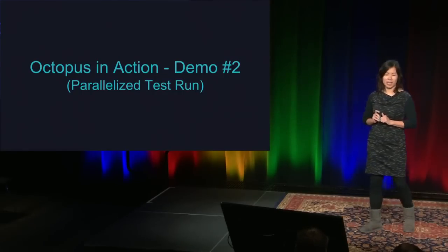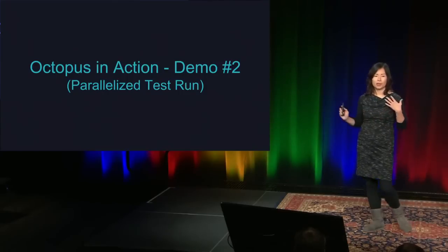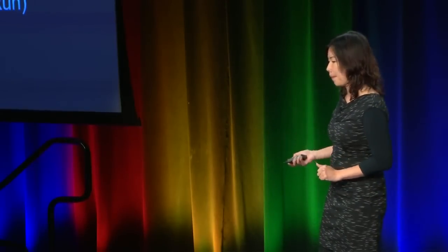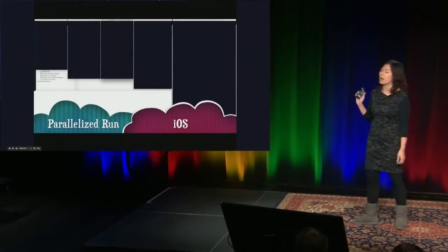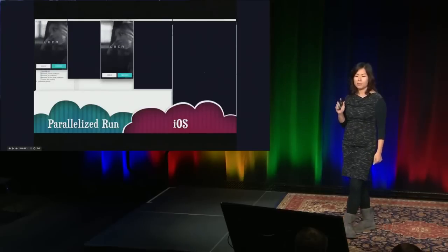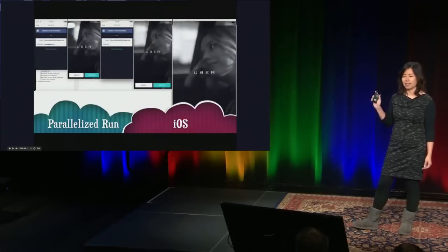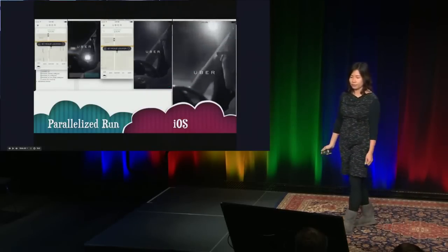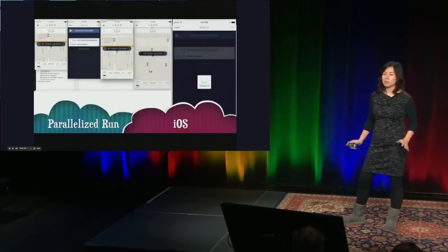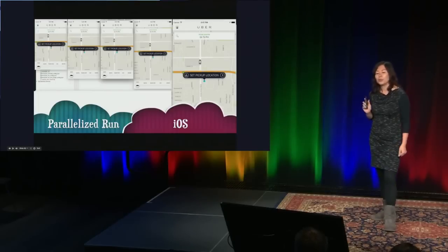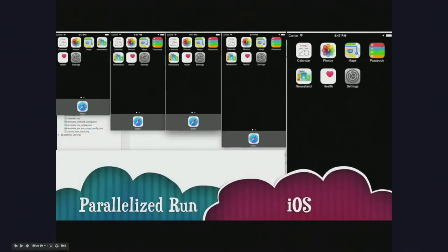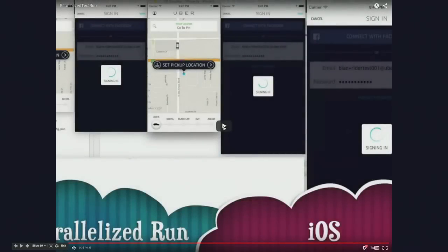Let's see another demo of Octopus in action. In this demo, you'll see Octopus launching multiple iOS simulators at once, running a test on them, and waiting for all of them to finish. Here Octopus launches five iOS simulators, each representing a different iOS version. It runs a login and logout for all the simulators, and one by one they logout and exit. Using parallelized test runs, we can shard our tests across multiple test targets to speed up testing, or run the same tests across different iOS versions.